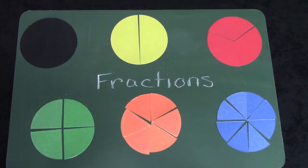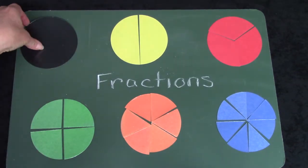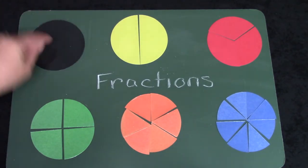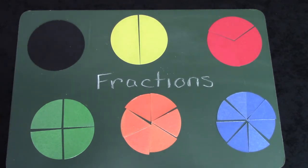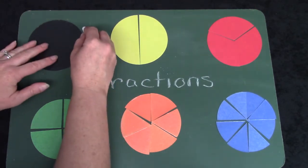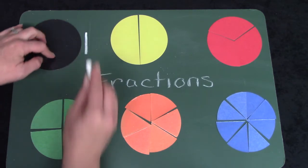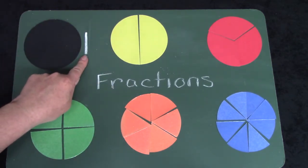A fraction of a number is a part of a number. Here we have one circle, and if we were to write that down, I would just draw the number one. One circle.